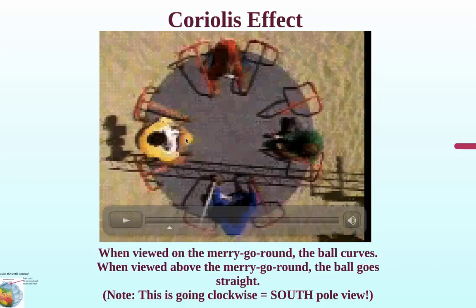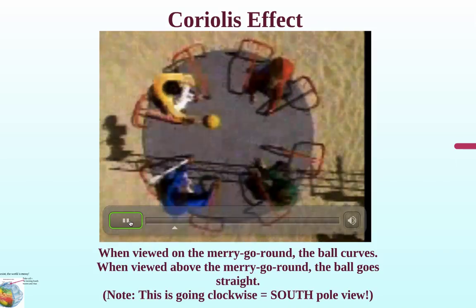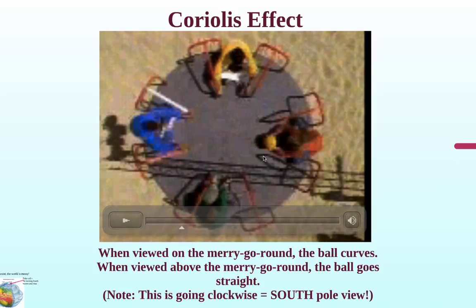So the kid on one side of the screen is going to roll the ball across the merry-go-round, and you'll see the ball go straight across. We would think the kid in green is going to catch it. But wait — the ball started on the left-hand side of the screen and ended up on the right. The kid in red caught it. So to them sitting on the merry-go-round, it appeared to curve. But to us above the merry-go-round, we saw it go all the way straight across the screen.